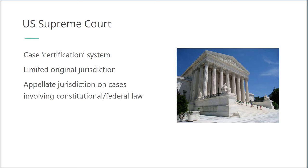The Supreme Court has appellate jurisdiction — that is, it can hear cases on appeal — on almost any case that involves a point of constitutional and/or federal law. Some examples include cases to which the United States is a party, cases involving treaties, and cases involving ships on the high seas and navigable waterways.